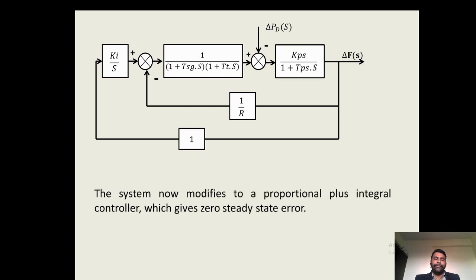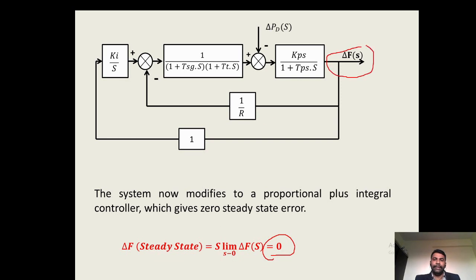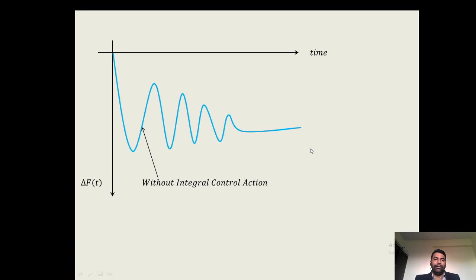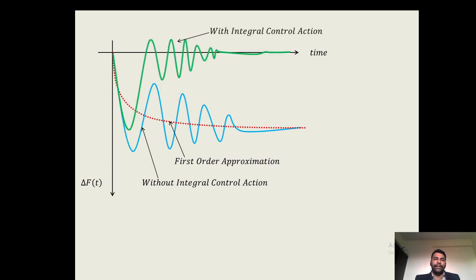When we find out the steady state change in frequency, we will see that the steady state change in frequency for this particular system becomes 0. So, we can say that with the help of the integral controller, the change in frequency at this point becomes 0. We will now see the graph of frequency versus time. For a positive change in the load, the change in frequency is given by this curve. This is without integral control action — this is the first-order approximation. This is the frequency response for integral control action.